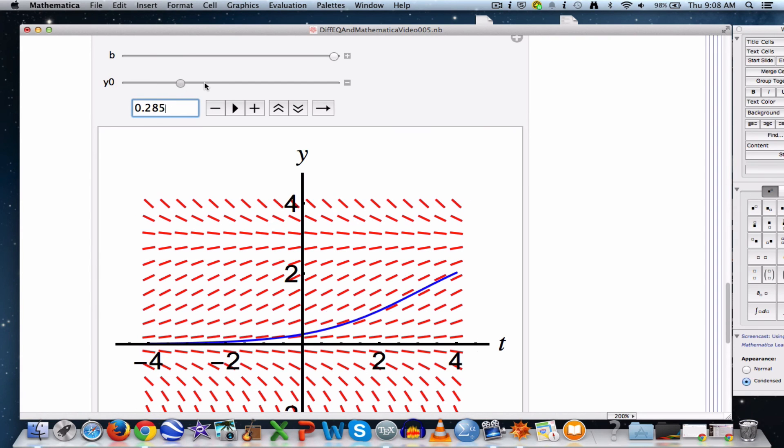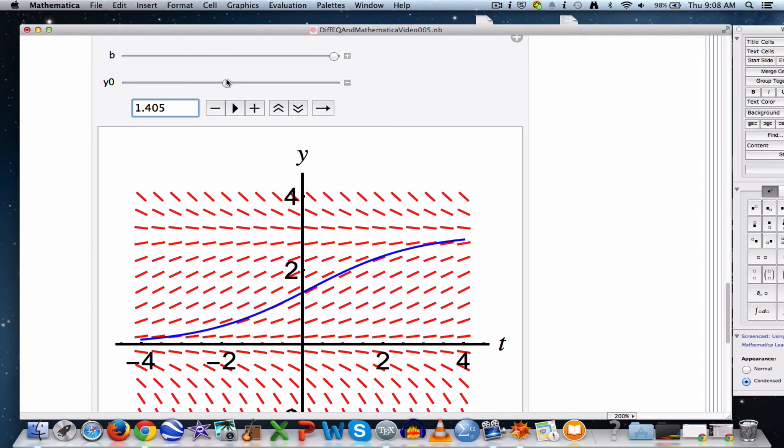So this is very important to realize: you get a bunch of different solutions for different values of y0, and a couple of them are constant functions. Those are called equilibrium solutions. I'll end this video there. In the next video, I plan to use a command that's new to Mathematica 10 and was introduced to me by David Arnold, called DSolveValue, that is a little easier to use in some ways than DSolve.